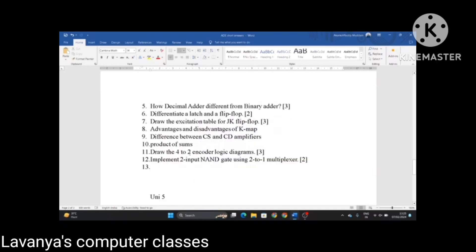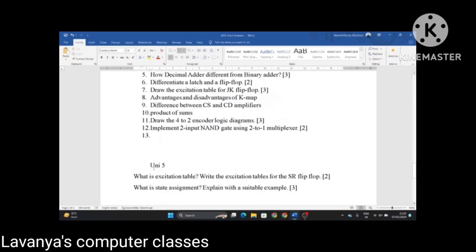Explain about product of sums or sum of products, truth tables. Draw the 4 to 2 encoder logic diagram. Implement two input NAND gates using 2 to 1 multiplexer. These are the important questions in unit 4.